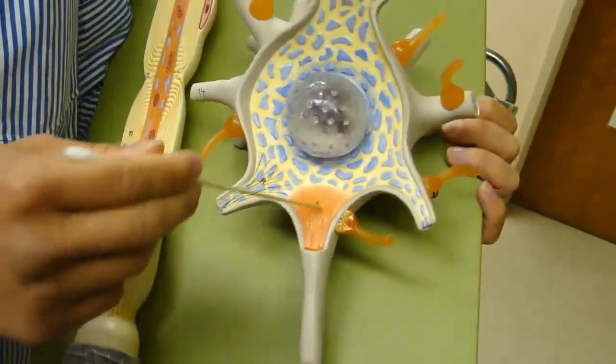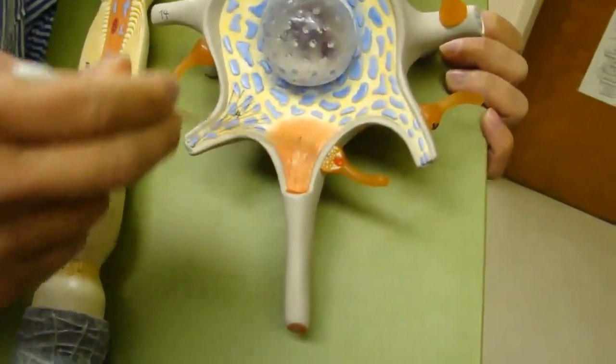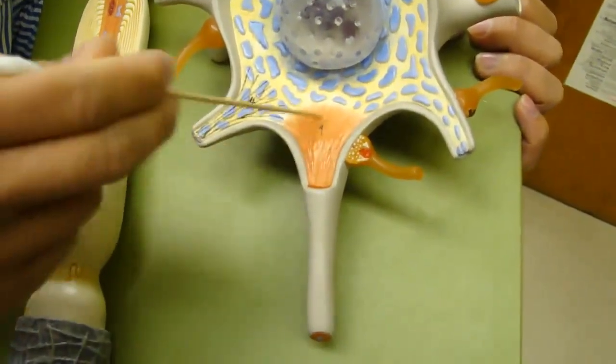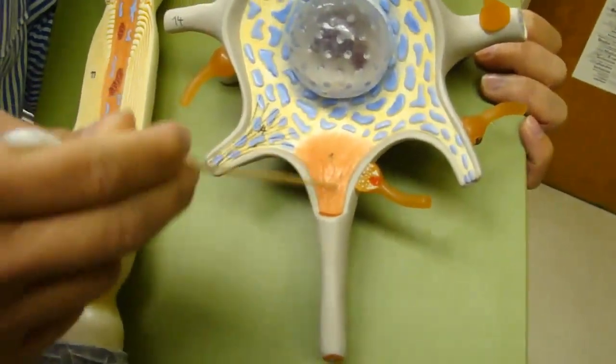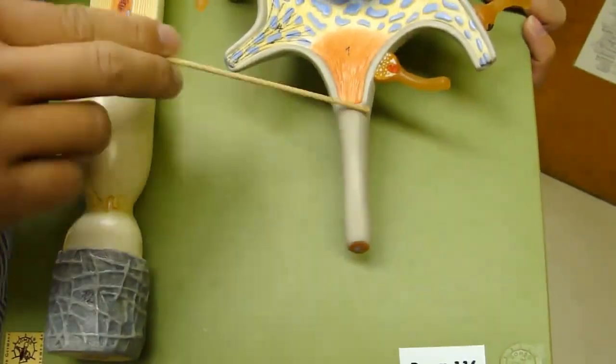So move along, this is the axon hillock, it's where the action potential is generated so you learn that more in physiology and this right here is the first segment of the axon.